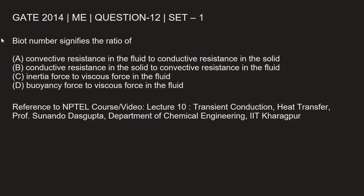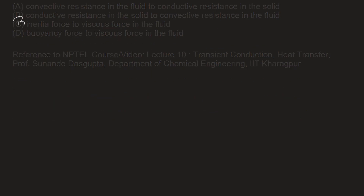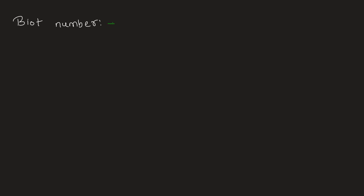This question is from the 2014 Mechanical Engineering paper, Set 1, Question Number 12. Biot number signifies the ratio of: Option A — convective resistance in the fluid to conductive resistance in the solid; Option B — conductive resistance in the solid to conductive resistance in the fluid; Option C — inertia force to viscous force in the fluid; or Option D — buoyancy force to viscous force in the fluid.